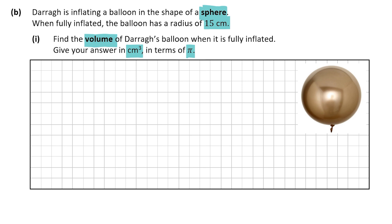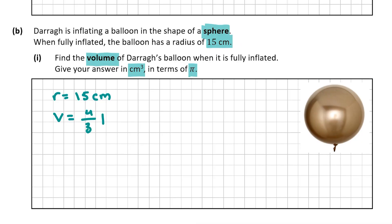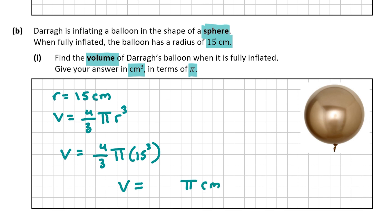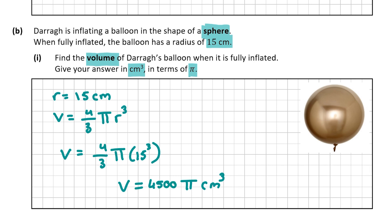We need to find the volume of a balloon with a radius of 15 centimeters, and give our answer in terms of π. Going back to page 10 of the log tables, the volume of a sphere is 4/3 πr³. Filling in r = 15: volume equals 4/3 × π × 15³. Multiplying 4/3 by 15³ and leaving the answer in terms of π, the volume of the balloon is 4500π centimeters cubed.